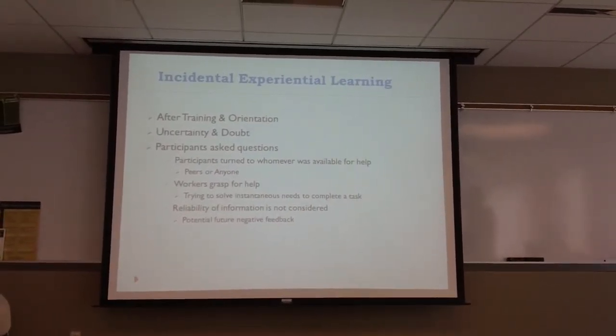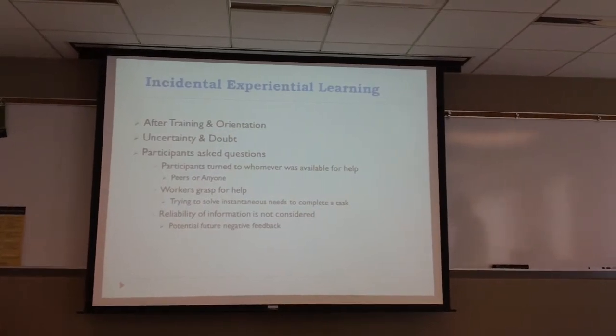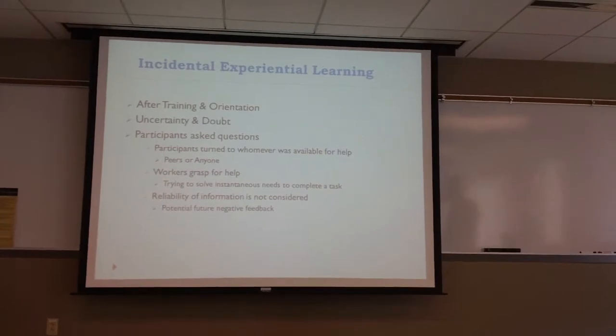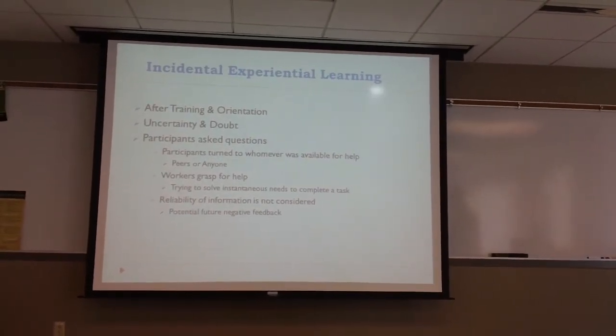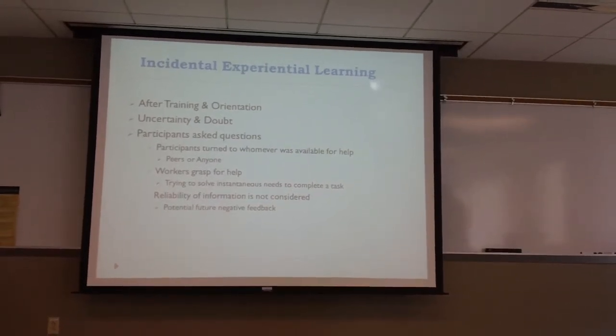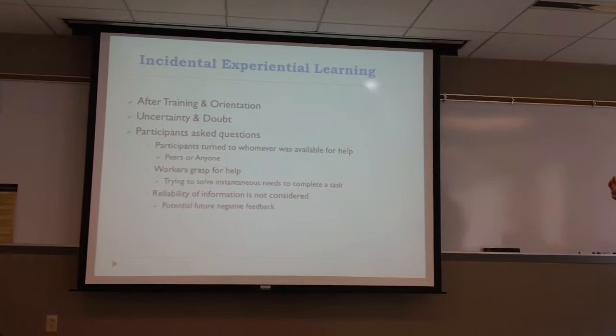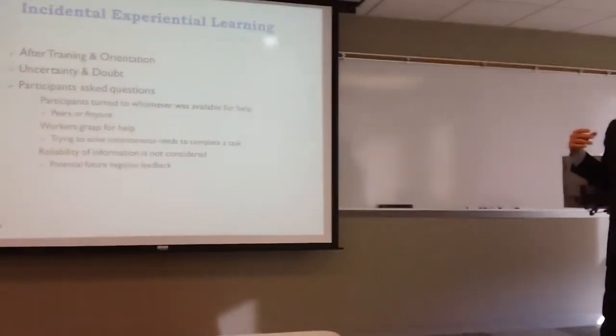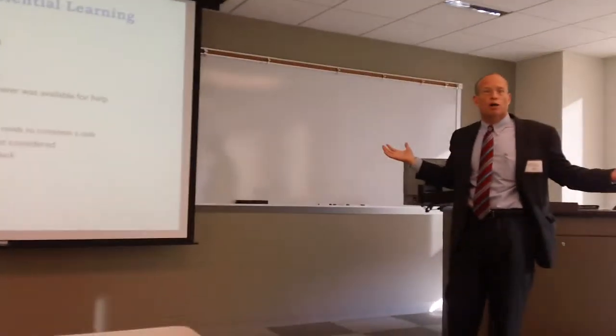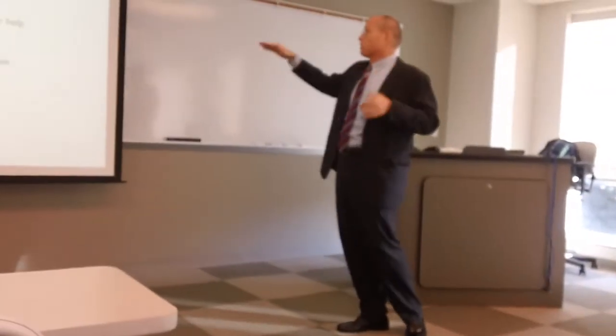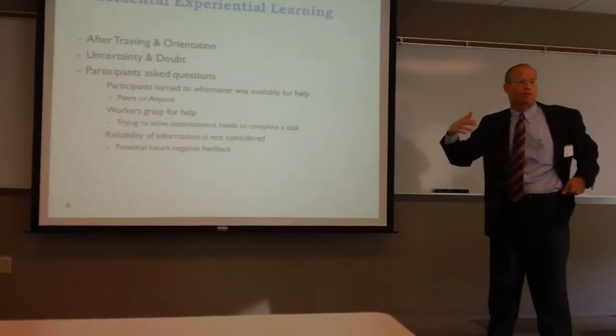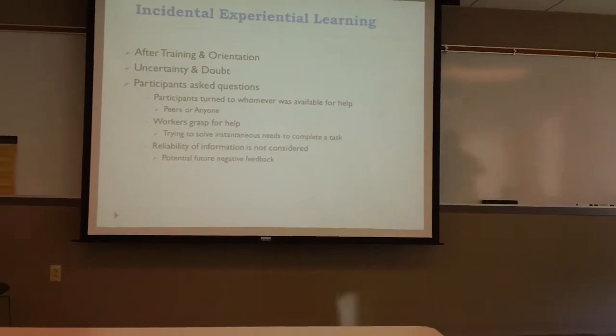All these phone calls came in and she didn't know what to do. So then what did she do? She asked questions. To a person, every one of the 21 people answered this the same way: they asked anybody. First they turned to their peers. If you guys were doing the same job, you turn to your peer for help. But if they weren't there—on vacation, sick, or something—they'd ask anybody who walked by. They were grasping for help, looking to complete the tasks they were prescribed to do.